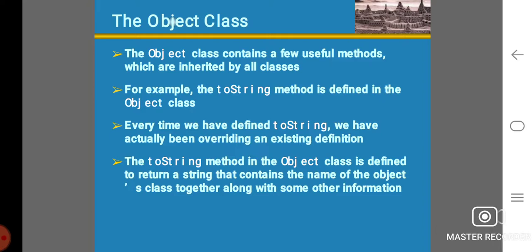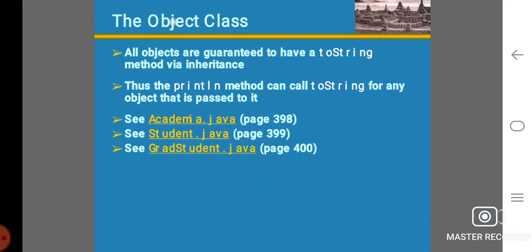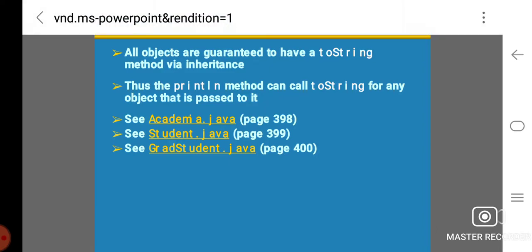The Object class contains a few useful methods which are inherited by all classes. For example, the toString method is defined in the Object class. Every time we have defined toString, we have actually been overriding an existing definition. The toString method in the Object class is defined to return a string that contains the name of the object's class together with some other information. All objects are guaranteed to have a toString method via inheritance, thus the println method can call toString for any object that is passed to it.